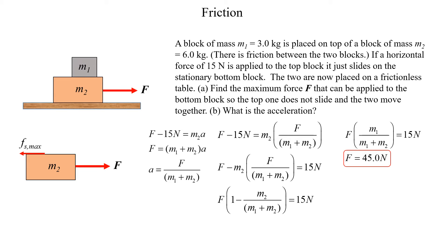Newton's third law tells us there is a reaction force acting on the bottom block from the friction acting on m1, and that reaction force is equal and opposite. So the bottom block will have a force from the top one acting to the left. That's the reaction force — the action-reaction law. Let's draw a free body diagram. The only force acting on the top one, m1, is the friction from m2 acting on m1. And if we want m1 to move to the right, that frictional force has to push m1 to the right.